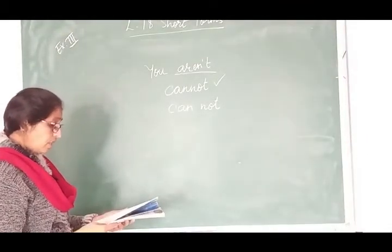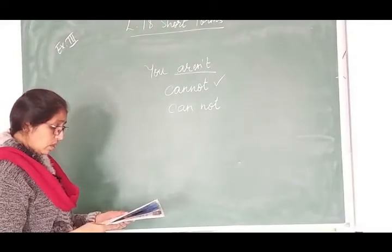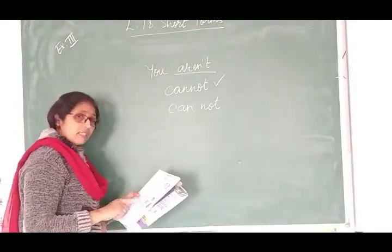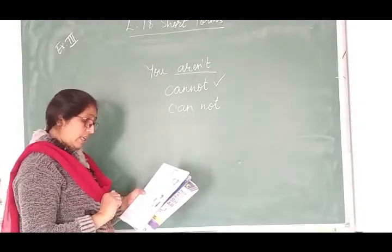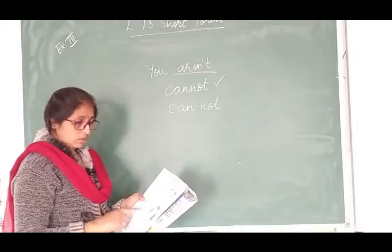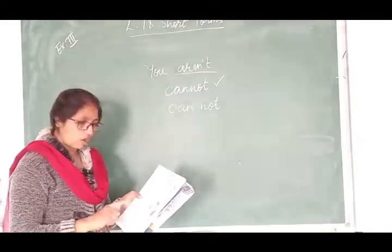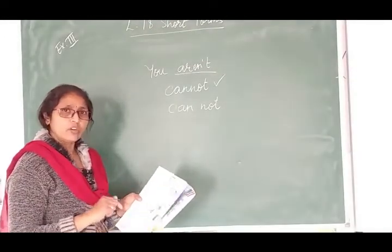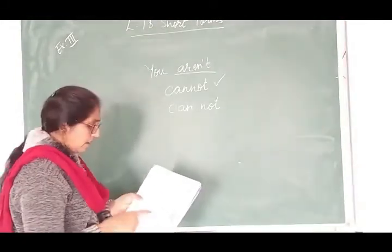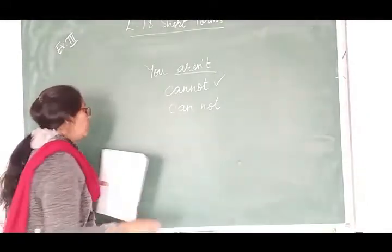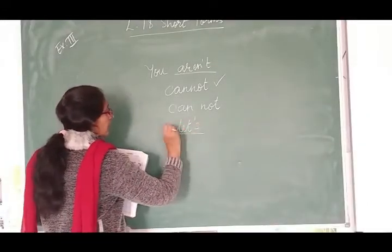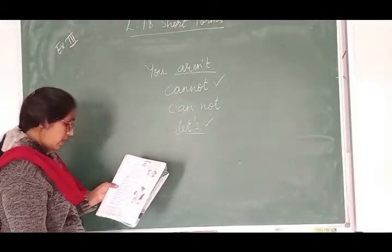Next, it's hot today, let's go swim. Par let's ke saath jo apostrophe lagna chahiye vo nahi hai. Second vala mein, it's hot today, let's go and swim. Dekho, second mein kya hai, it is hot today, uska hi short form laga, it's hot today. Let's, let's ke paas mein L-E-T apostrophe, S laga hai. First vala mein nahi hai. So, L-E-T apostrophe, S wala sentence jo second hai, that is the right sentence form.